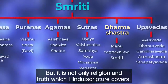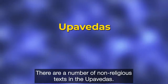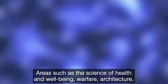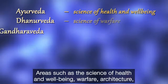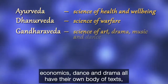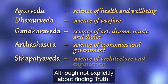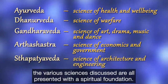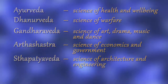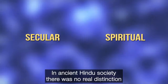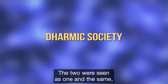But it is not only religion and spiritual truth which Hindu scripture covers — there are a number of non-religious texts in the Upavedas. Areas such as the science of health and well-being, warfare, architecture, economics, dance and drama all have their own body of texts written by different rishis. Although not explicitly about finding truth, the various sciences discussed are all presented with a spiritual foundation. In ancient Hindu society, there was no real distinction between the secular and the spiritual — the two were seen as one and the same, and worldly knowledge was seen as complementary and not contradictory to finding God.